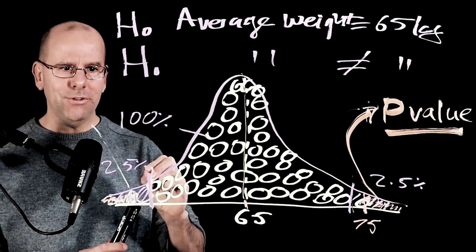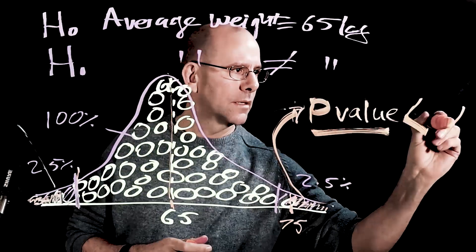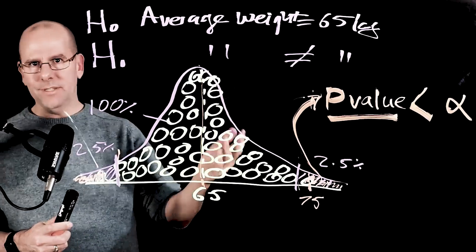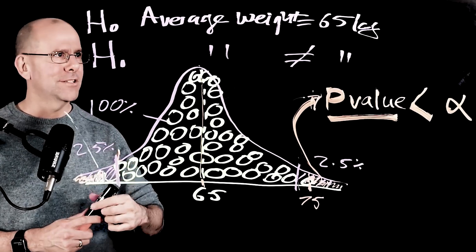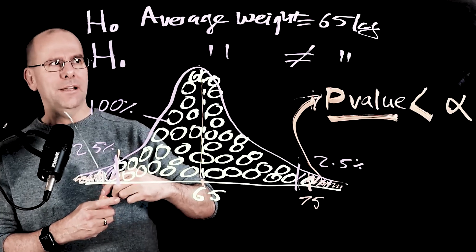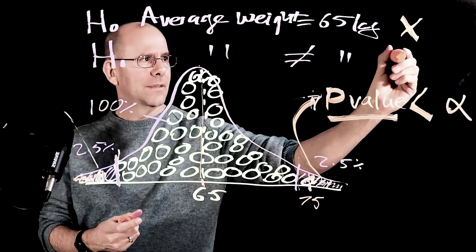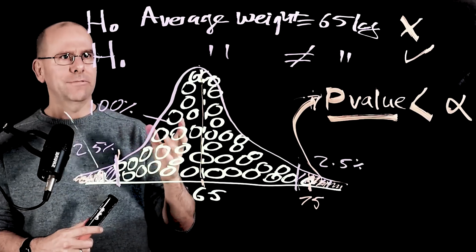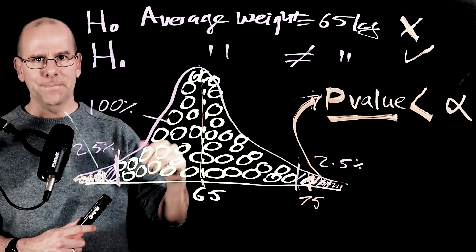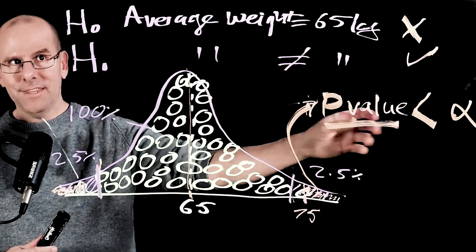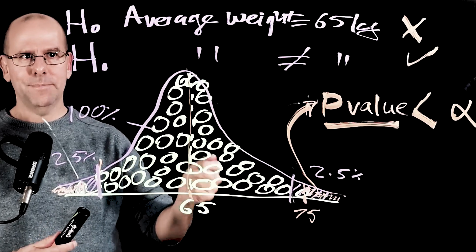And provided that your p-value is less than that threshold we talked about, the alpha. In this case, that's 5%. So if the p-value in this case was 3% and the alpha value, the threshold was 5%, that would be sufficient evidence for us to say we reject the null hypothesis and we accept the alternative hypothesis and we've got confidence that in actual fact, the average weight of men in Ireland is not 65 kilograms. And if the p-value was greater than alpha, then we would say that we've failed to reject the null hypothesis and we don't have sufficient evidence to accept the alternative hypothesis.